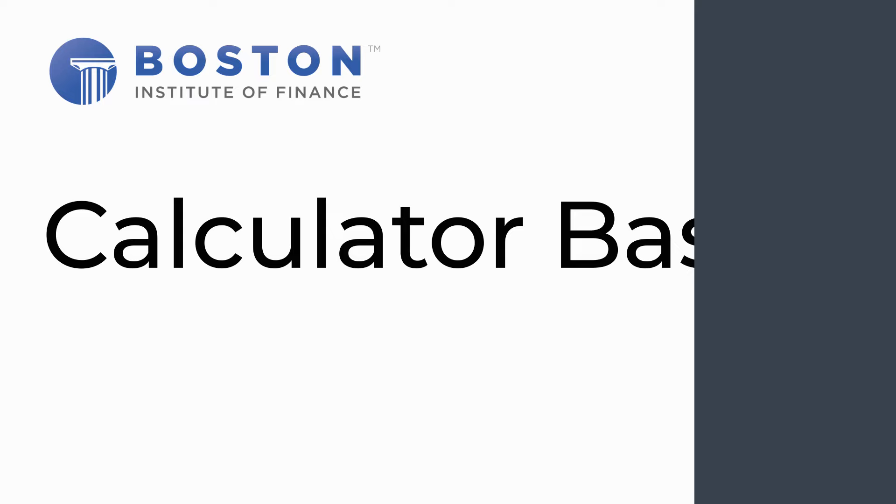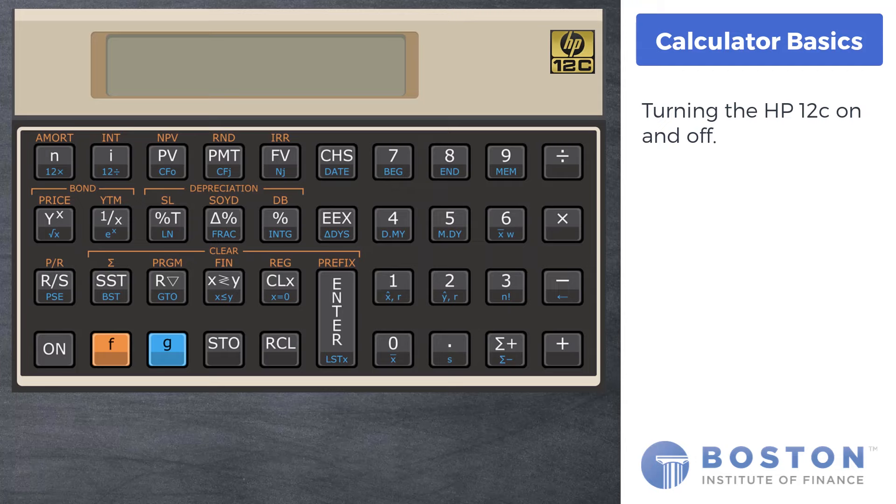Turning the calculator on and off is done with a single key located in the lower left hand corner of the keypad labeled ON. A single press will turn on the calculator. Another single press on the ON key will power down the calculator.